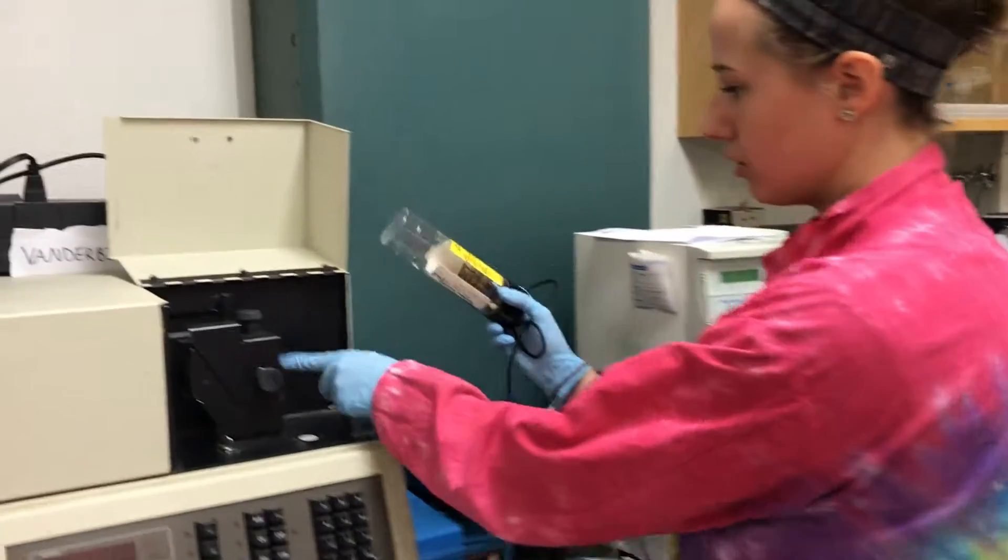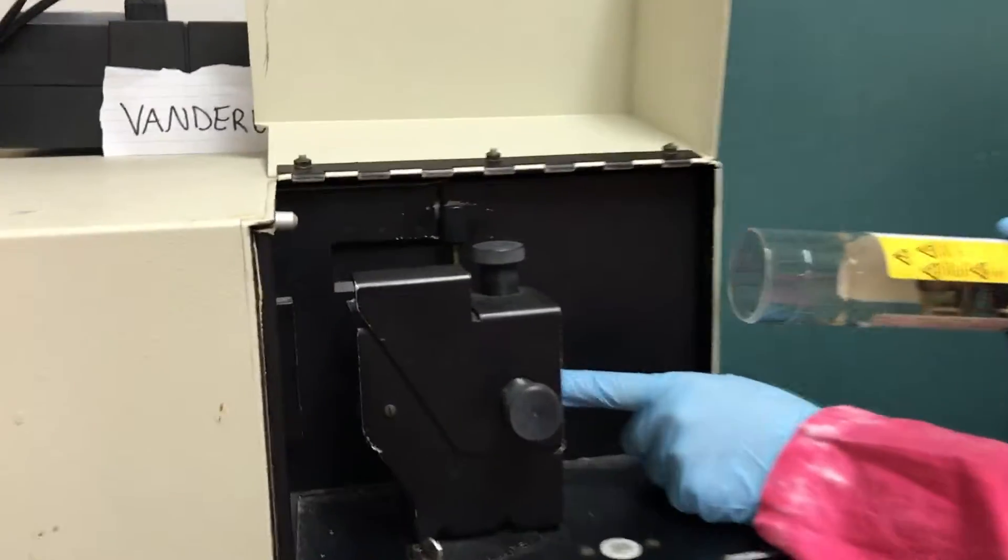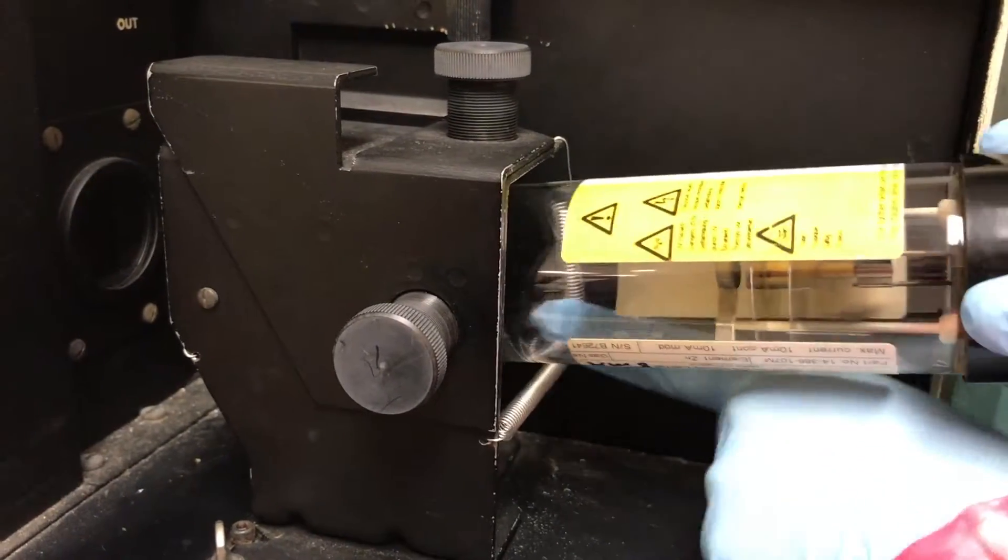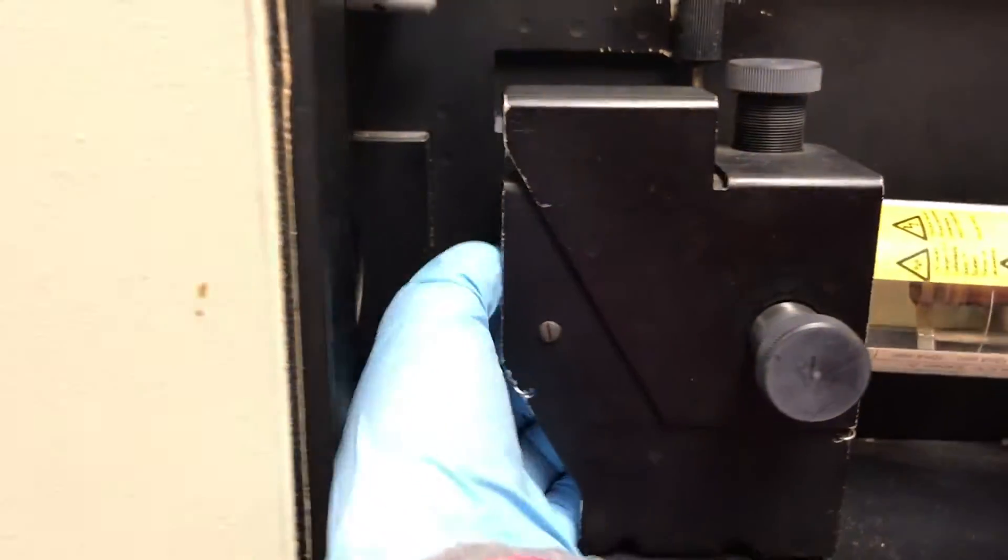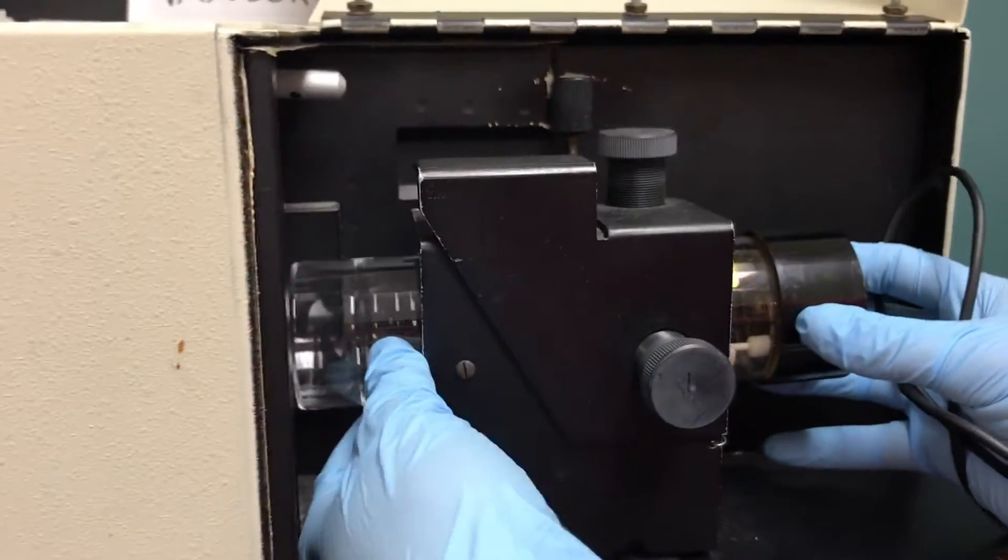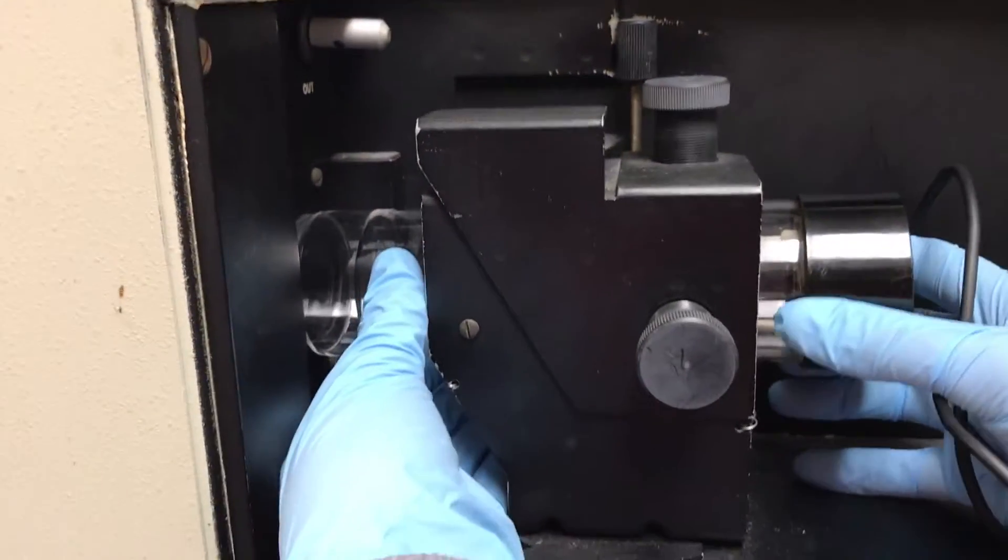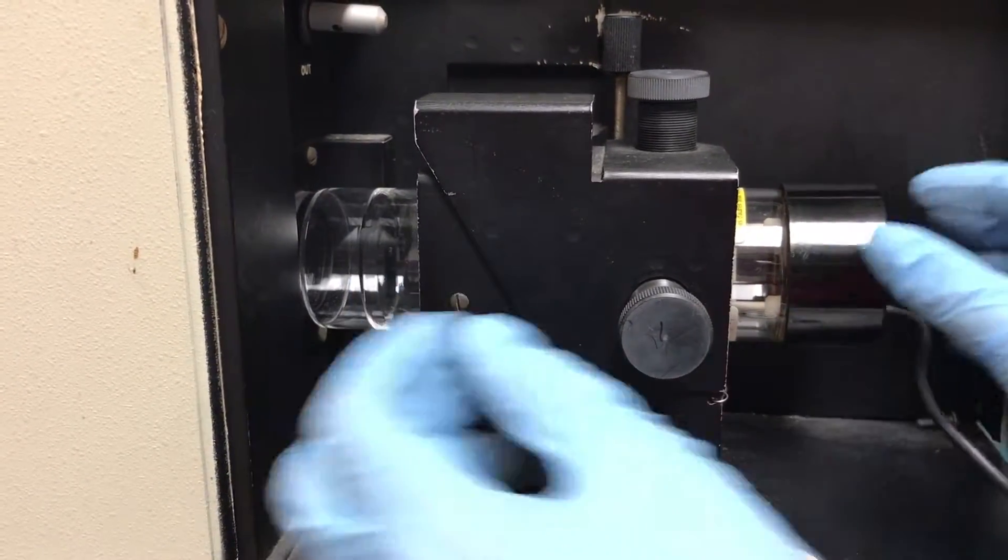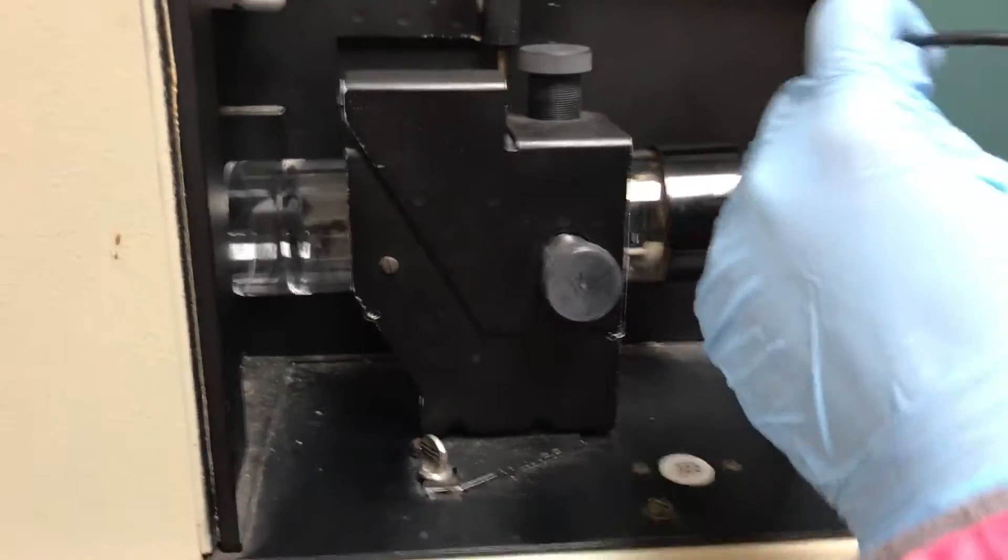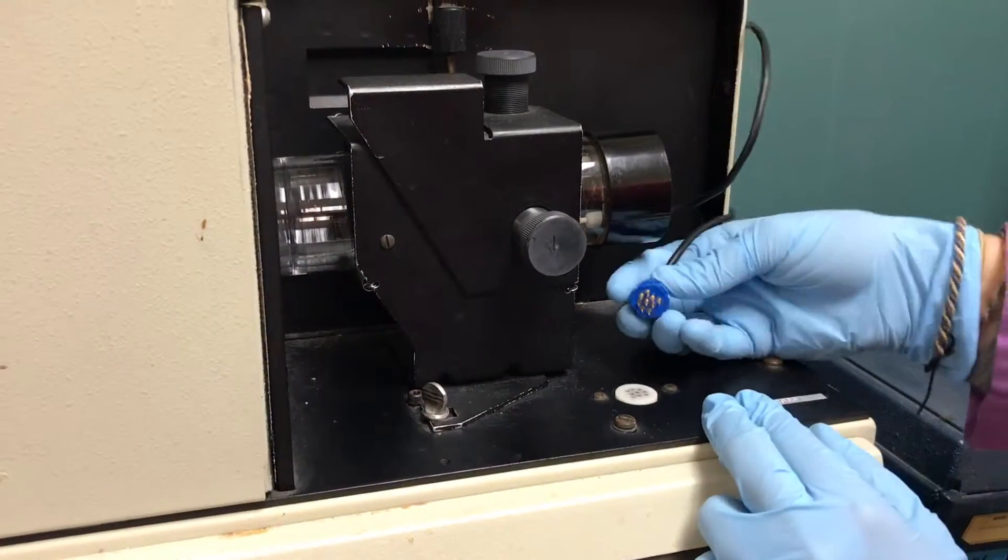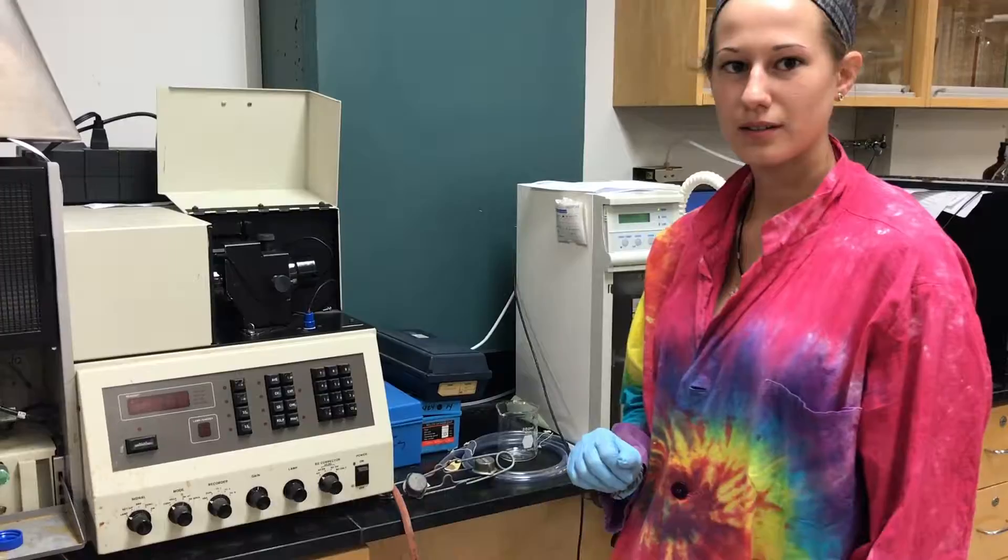This hollow cathode lamp emits a wavelength that is similar to the wavelength that zinc absorbs. To insert the lamp, you pull on these springs here, insert it carefully. There's another one on this side. And push the lamp all the way through until it just touches, and then slightly pull the lamp back so there's a small gap in between the lamp and the instrument.